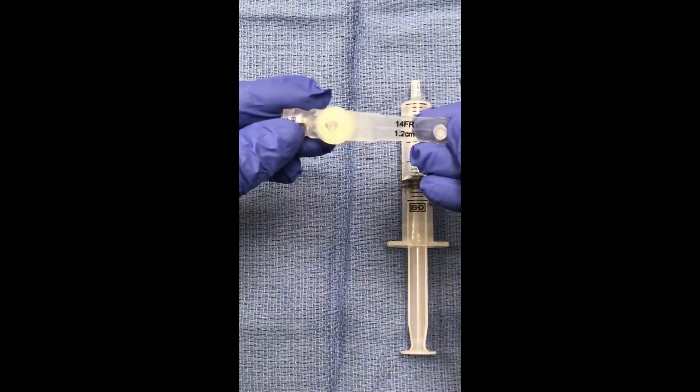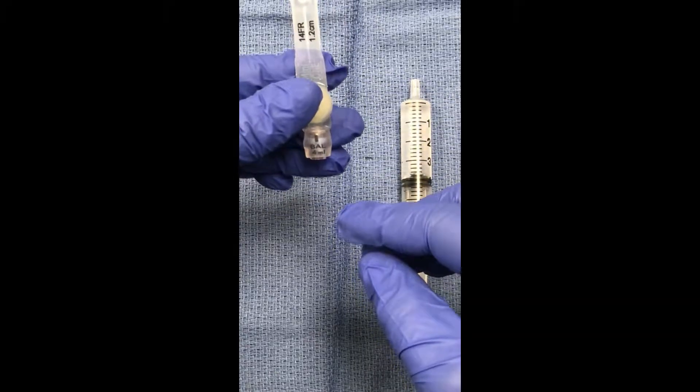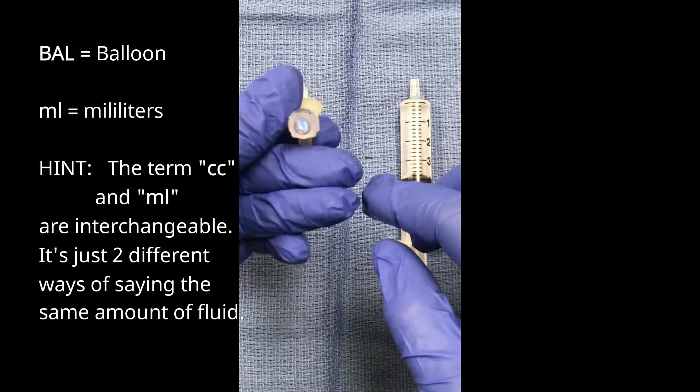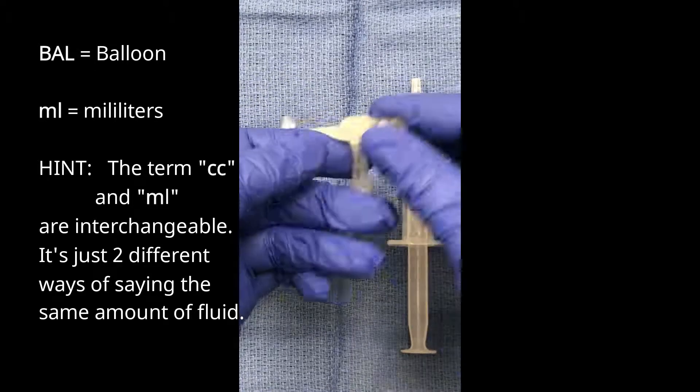If you also notice on the side, there's a blue port that's labeled. It's got a straight line, the letters BAL and 4ML. The 4ML relates to how much volume you need to inflate the balloon.